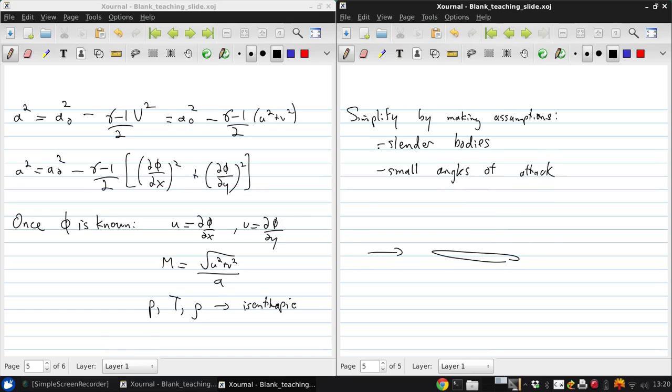Now, making these two assumptions leads us to be able to develop an approximate linear form of the velocity potential equation for subsonic and supersonic flow, but not for subsonic flow, as we'll see. So we get a linear approximate equation for the potential with an analytical solution. And we'll develop that equation now.